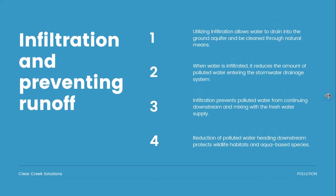Through infiltration and preventing runoff, we can mitigate some of these issues. By utilizing infiltration, it allows water to drain into the ground aquifer and be cleaned through natural means. When water moves through a ground aquifer, the natural roots in the ground do a great job of pulling different pollutants from the water and keeping it clean. When water is infiltrated, it reduces the amount of polluted water entering the stormwater drainage system as a whole.